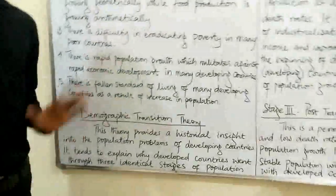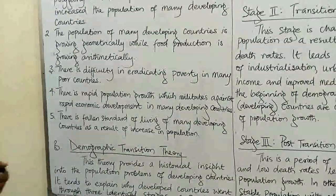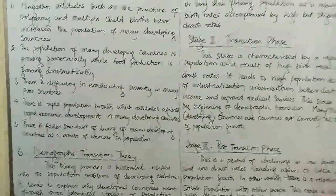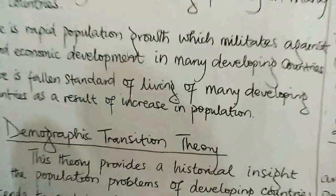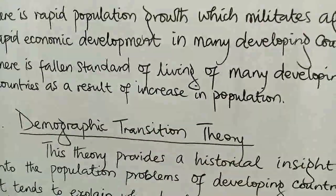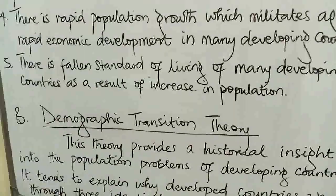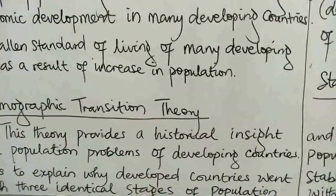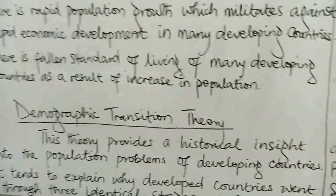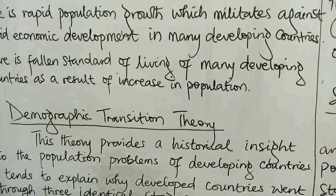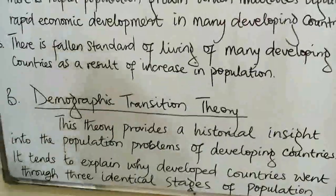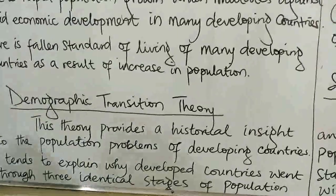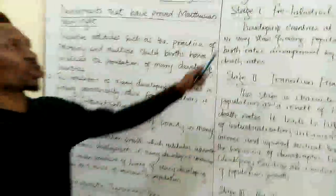We are done with Malthus' theory of population. Let us look at the next theory of population, known as demographic transition theory. This theory provides a historical insight into the population problems of developing countries. It tends to explain why developed countries went through three identical stages of population, which we are going to discuss.